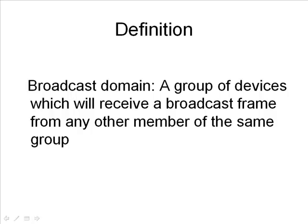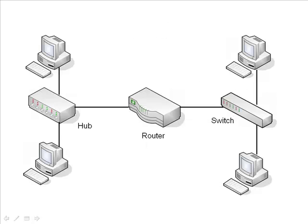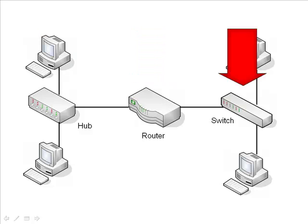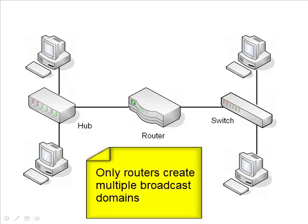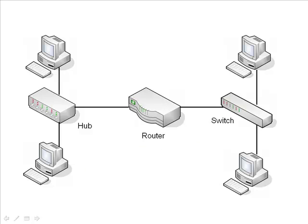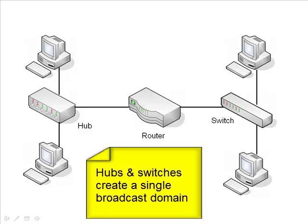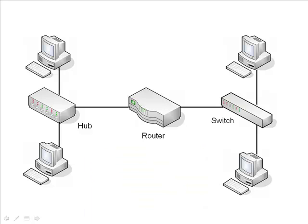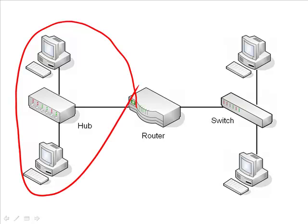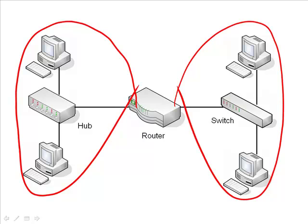Now let's take a look at the devices and how they create broadcast domains. This is our local area network — we have a hub with two PCs on it, connected to one port on the router, and then we have a switch connected to a different port on the router, and it too has two PCs hanging off of it. The first thing to note is that routers are the only ones which create multiple broadcast domains. Hubs, switches, and bridges create a single broadcast domain. That would be one broadcast domain, and this would be a second broadcast domain.